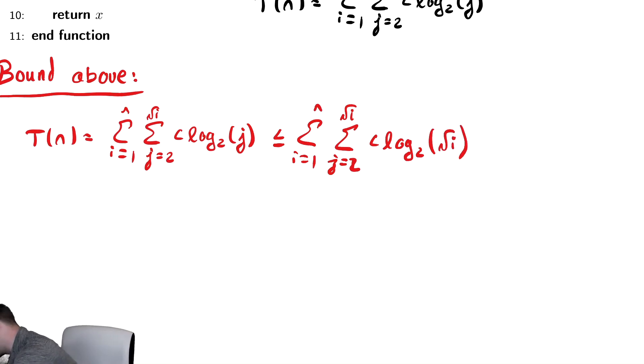And now we're going to take the sum and multiply by the number of terms because we have eliminated j from the summation. This goes from one to n. The number of terms is radical i minus two plus one. And the inside is c log base two of radical i.